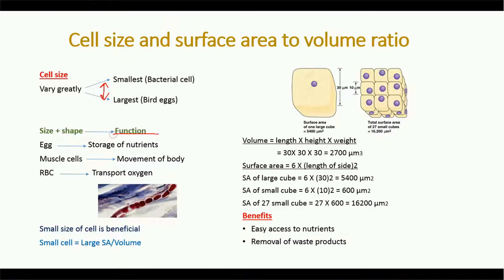The size and shape of a cell is very important because of its functions. The large size of the egg cell is important because it needs to store nutrients for the developing baby. Muscle cells are required for contraction and relaxation. The size and shape of red blood cells is important to transport oxygen — they are so small they can easily pass through the capillaries.